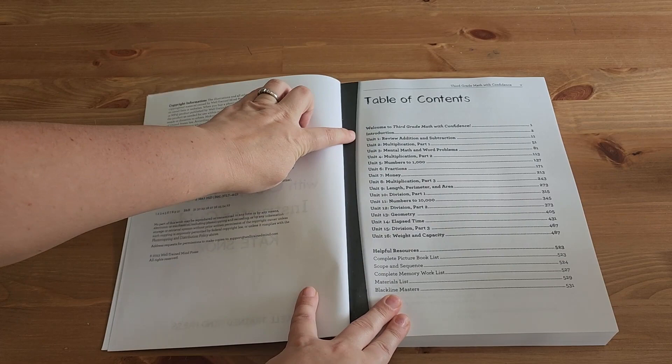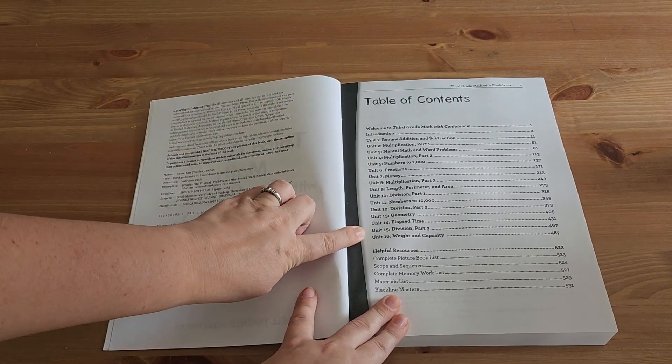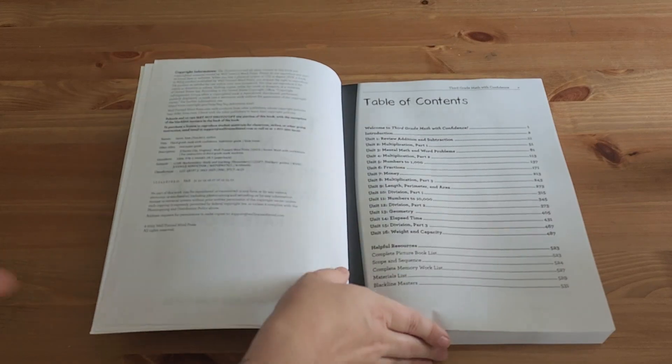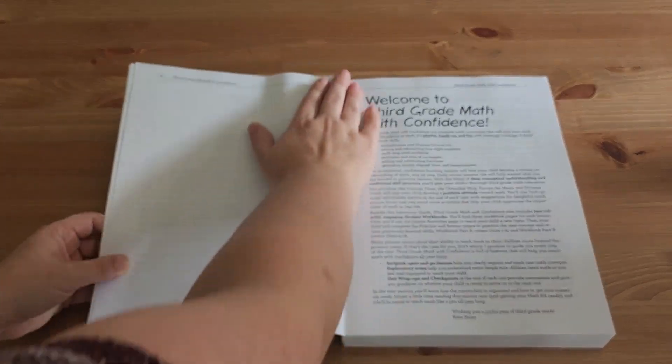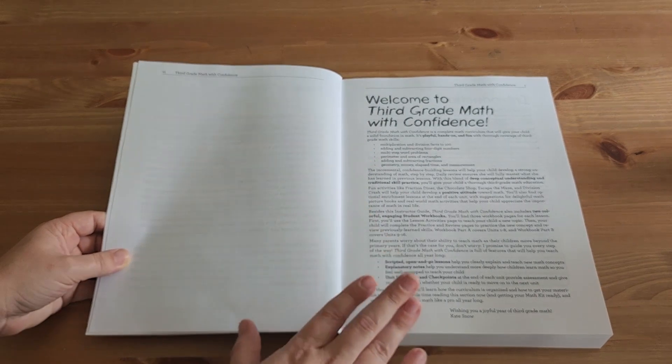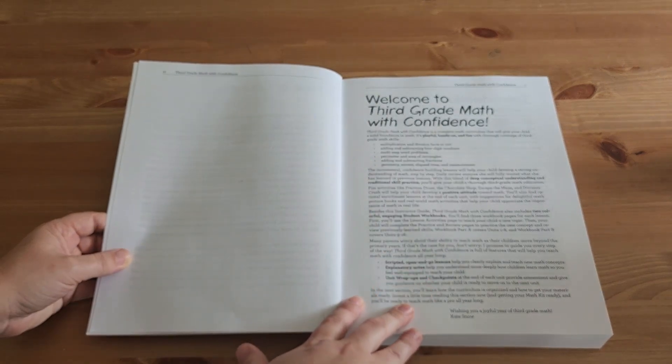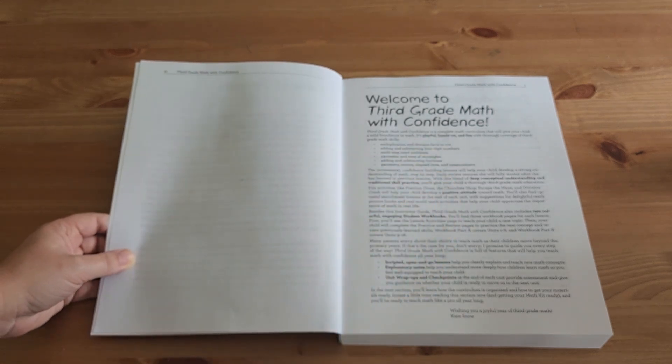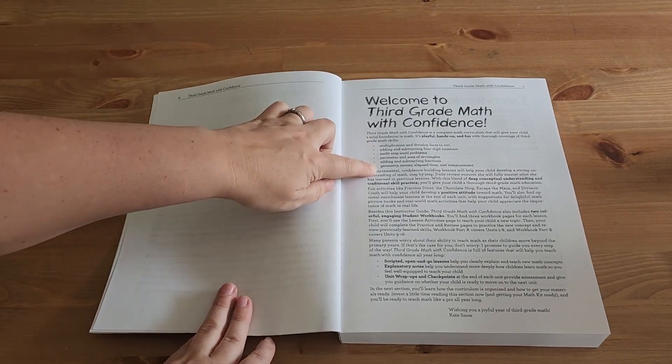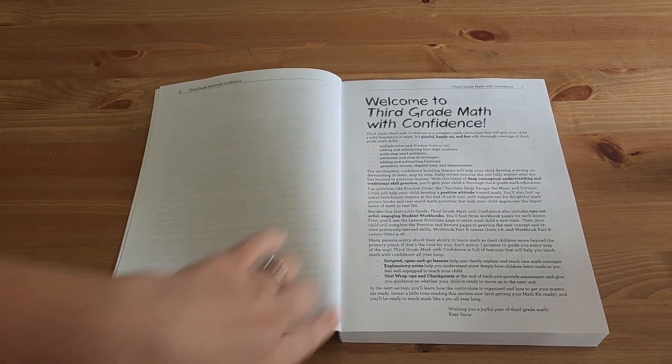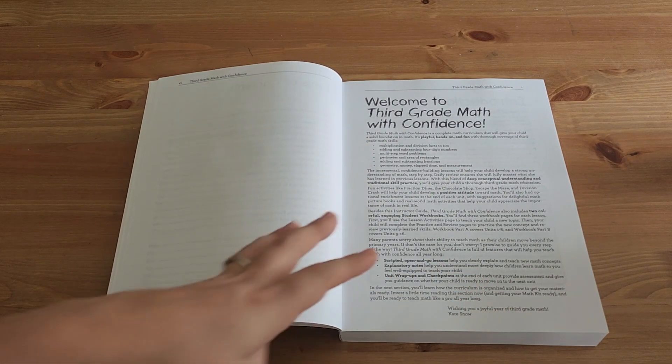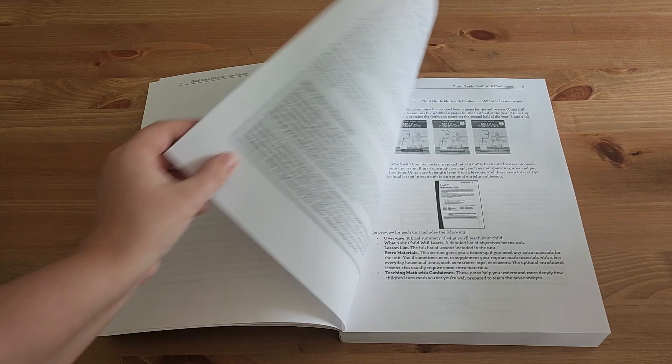So here we are with our two student workbooks and the instructor guide. So this is the very black and white, no color scripted instructor guide, but that's fine because it's for us. So you can see here is the list of all of the units. And then in the back, there's a bunch of extra resources.